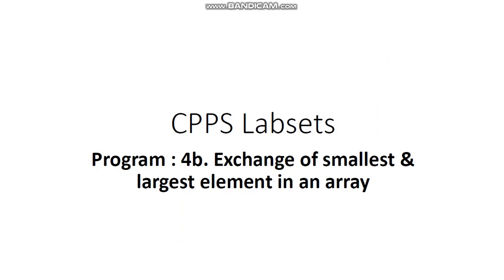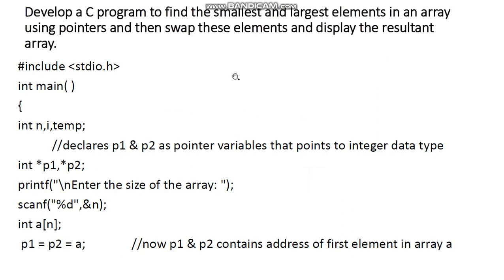Hello, welcome friends. This is Sheen Taj, assistant professor, Department of CSE, SIT Tumkur. I am presenting another C programming example for you. It's program 4B in our lab set. The basic aim of the program is to exchange the smallest and the largest element in an array. The detailed question described in the lesson is to develop a C program to find the smallest and largest elements in an array using pointers and then swap these elements.